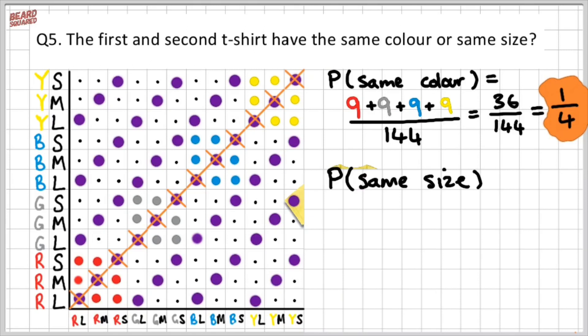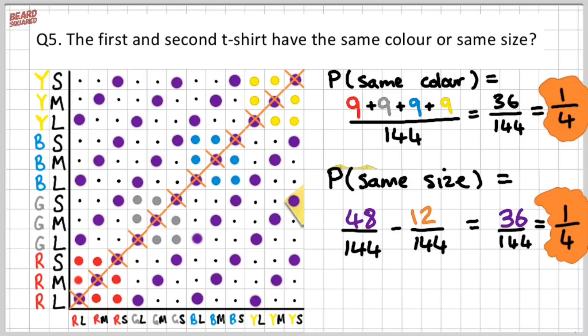Now remember, the probability of the same size, we originally had 48 purple dots. That's 48 out of 144. Now remember, we need to minus the 12 because they're a repetition of our previous outcomes. And so in total, we will have 36 out of 144, which we can simplify down to one quarter.